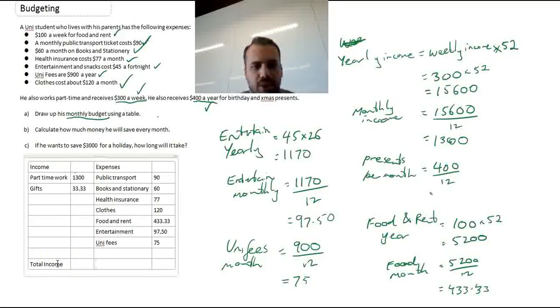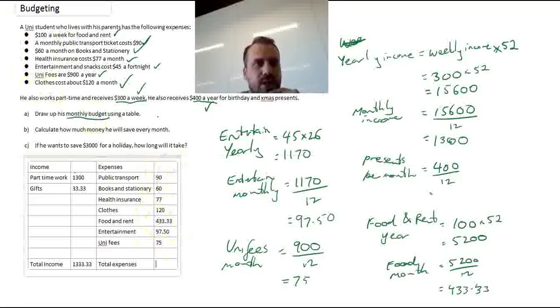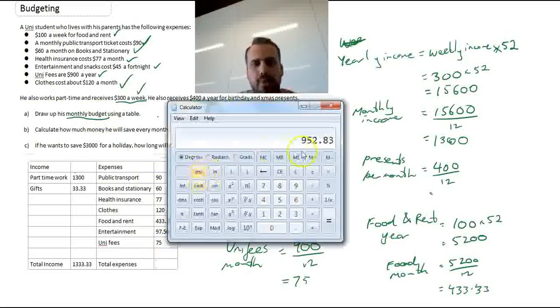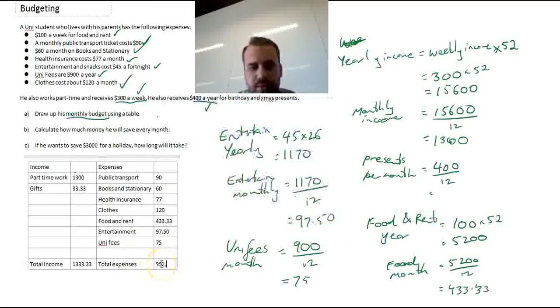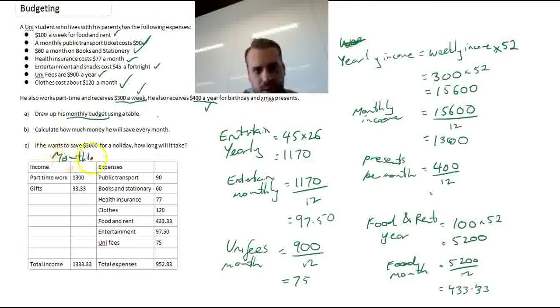Now, down the bottom here, we do total income and total expenses. That's just going to be a matter of taking all of these income amounts and adding them together. And taking all of these expense amounts and adding them together. I put all those amounts into my calculator and I ended up with $952.83.